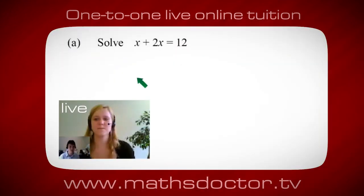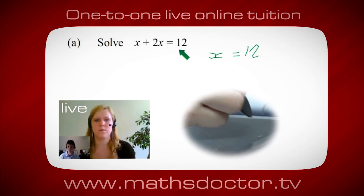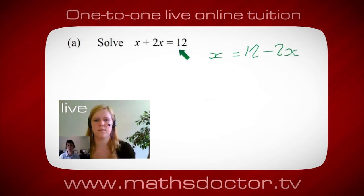Okay Marie, so let's have a look at this one. So solve x plus 2x equals 12. So what do you think you do first? Well I want x on its own, so I would put x equals 12 minus 2x. Okay, so a lot of the time we want to get x by itself but what we want to do first is get all of these x's together. So can you see anything we can do with this? Get all these together in one place.